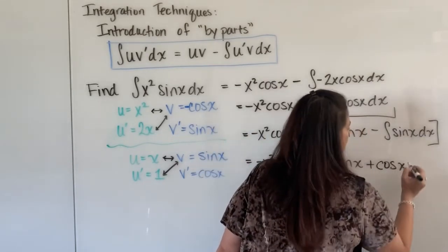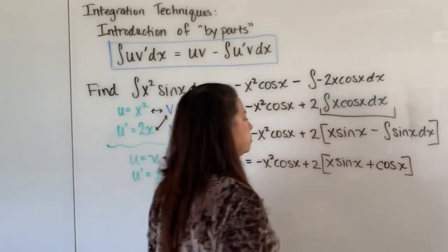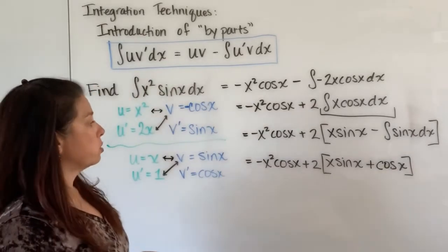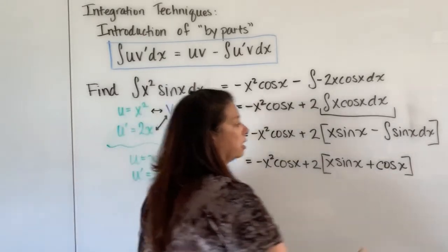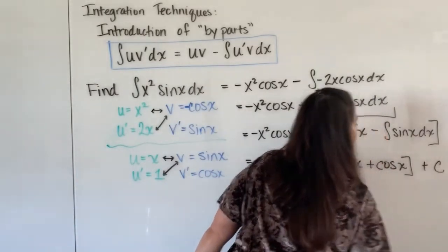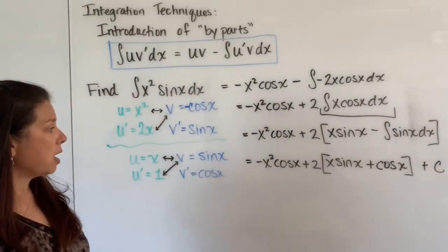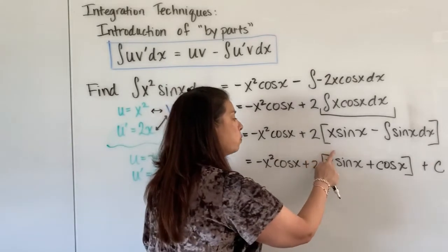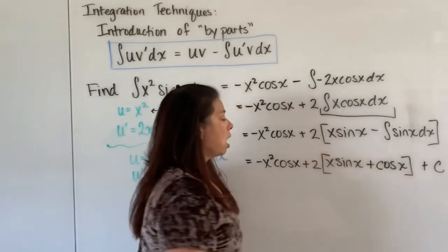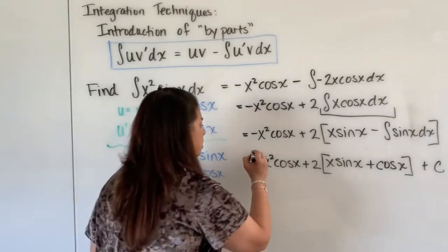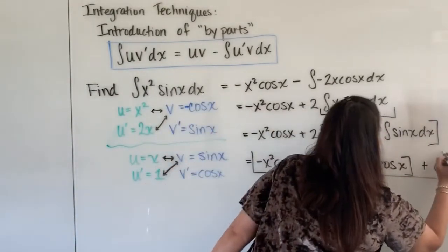Now of course I had an indefinite integral with no boundaries there in the beginning so I do need to go ahead and add my c there at the end. And of course like I mentioned you could if you want to distribute here the two on both of those, not really needed it could stay just like this and so I'm going to go ahead and box this as my final answer for the anti-derivative.